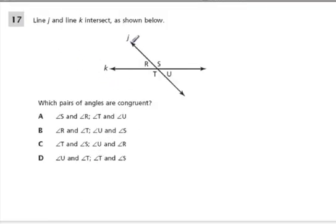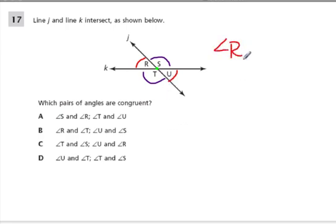Here's a similar situation. Line J and K intersect at this point. Which pair of angles are congruent? Now, not to say that S and U could not be congruent or any pair here — they could all be equal. We're not really even sure what these angle measures are, or even if the diagram is accurate. But we know for sure that S and T are vertical angles and must equal each other, and we know for sure that R and U are vertical angles and must equal each other. So angle R is congruent to angle U, and angle S is congruent to angle T.